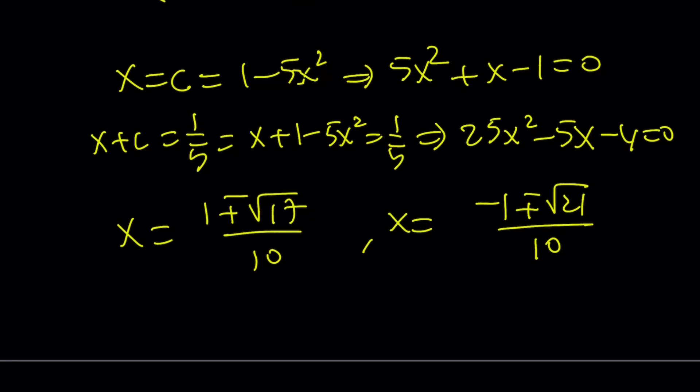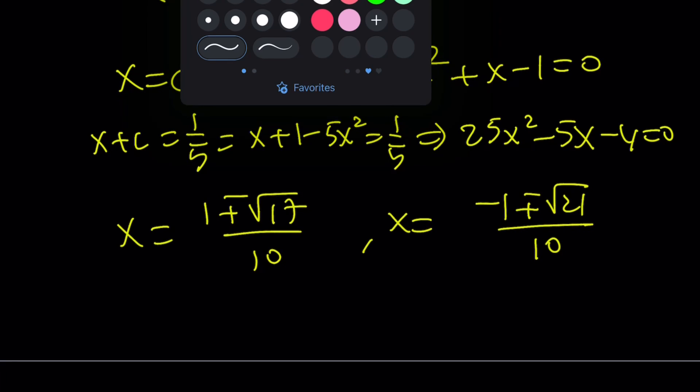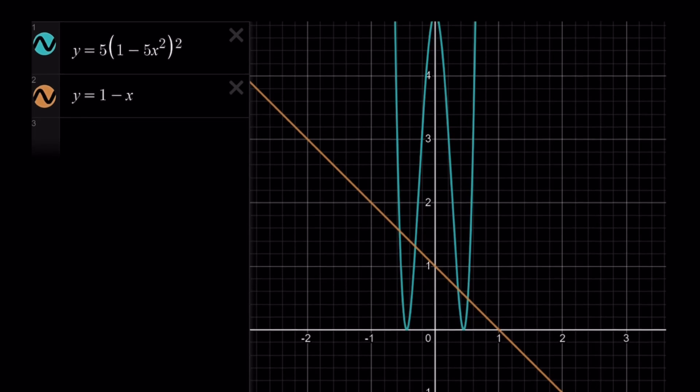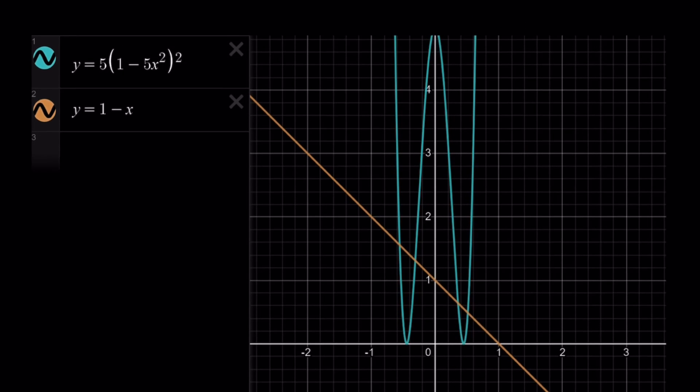Those are going to be the four solutions. Let's go ahead and take a look at the graph. Here you go. I graphed both of these functions for you. And you notice our quartic is pretty nice. It's symmetrical. It's an even function. 1 minus x is a straight line. And there are four intersection points.